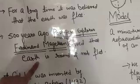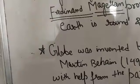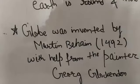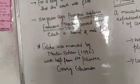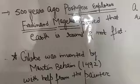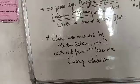From this period it became clear that earth was round, and from this very period the globes were invented. The person who invented the globe was Martin Behaim in the year 1492 with the help of the painter George Glockendon. This is very important to know for our general knowledge as well.